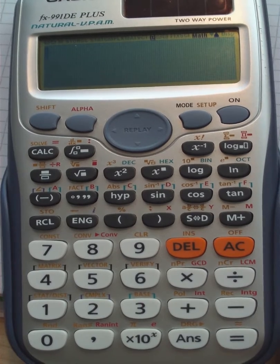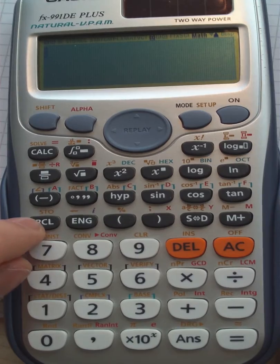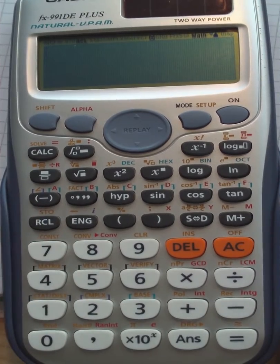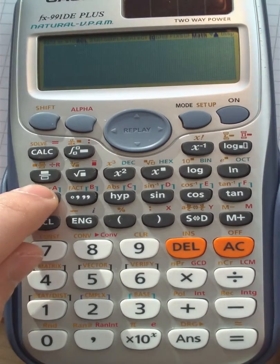The number is now stored to place A. If I want to recall this number, I simply press the recall button again without pressing shift and the corresponding letter, which was in this case A.